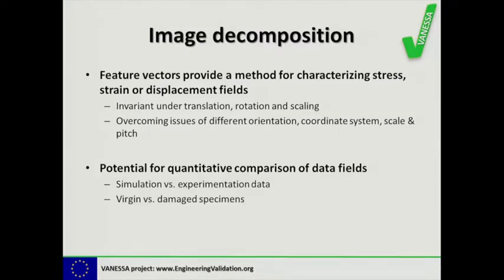The fact that we've reduced the dimensionality of the data from a large matrix into a feature vector also gives us huge potential for quantitative comparison of data-rich fields of stress, strain, and displacement. That's useful when we want to compare data from simulations with those from experiments, or maybe compare strain fields from virgin specimens against those from damaged specimens.